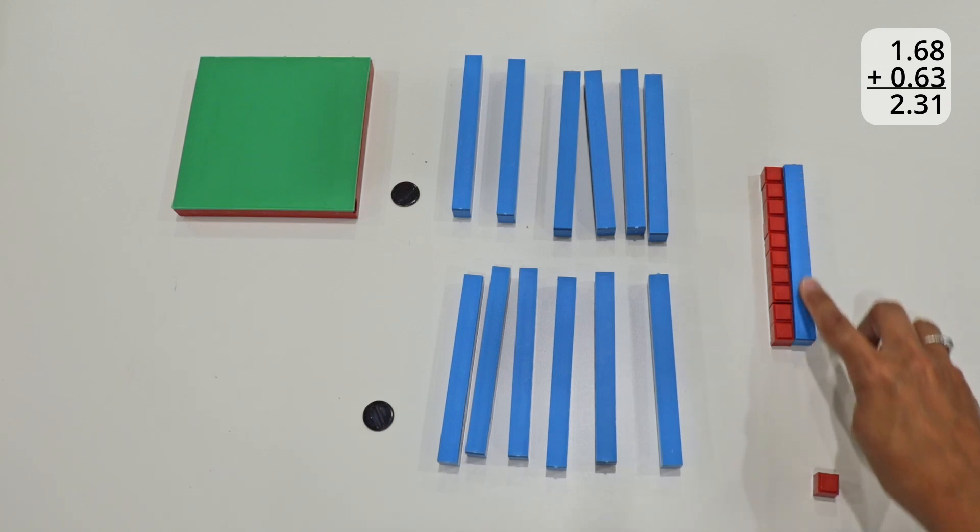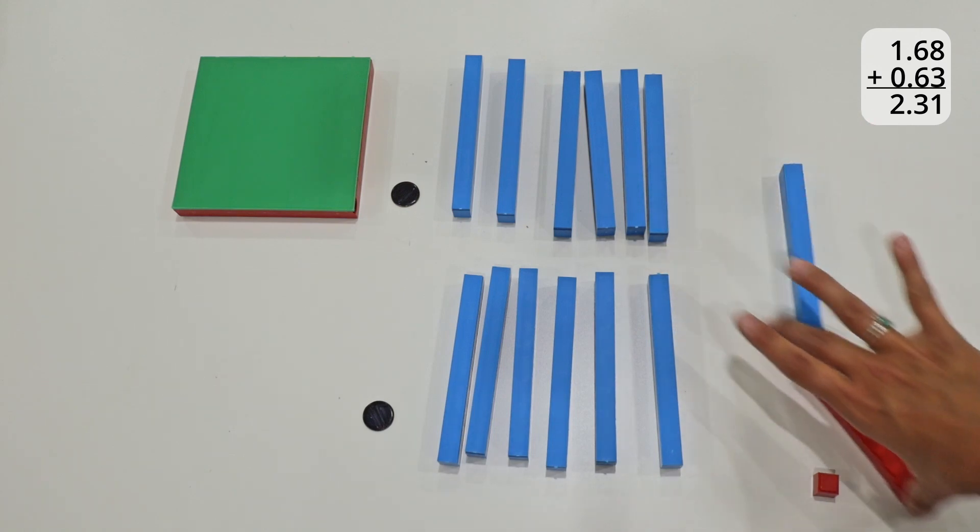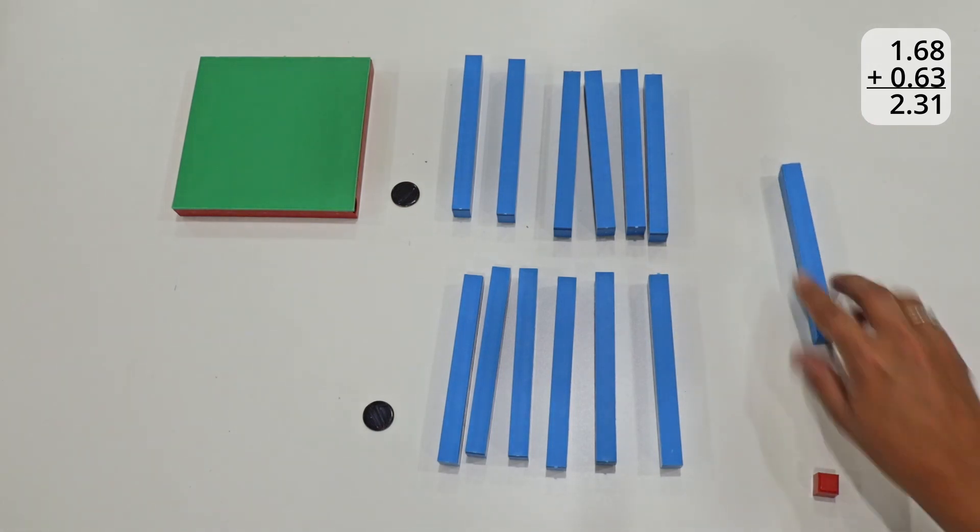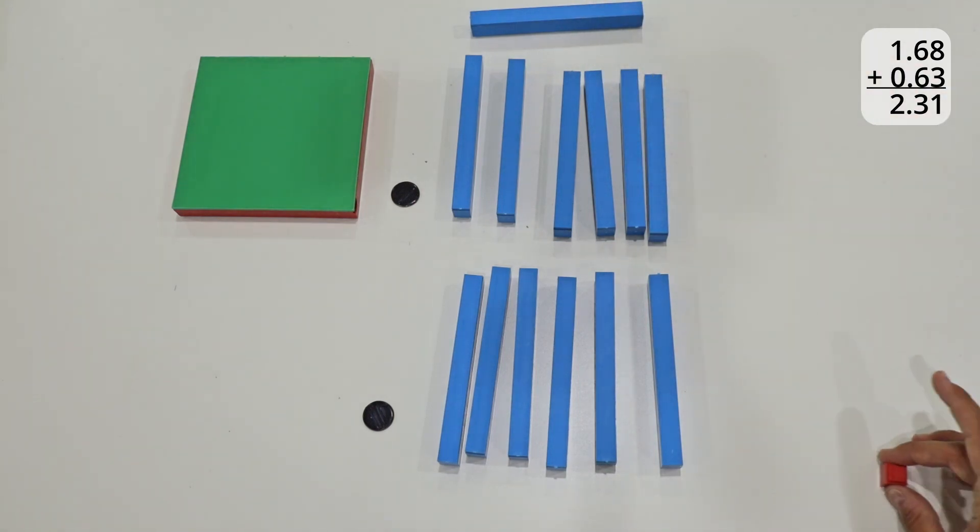And they can line it up and compare it to one of these tenth blocks, seeing that they equal and are the same size. So we're going to move this tenth block into this tenth column and we're going to get rid of all of these red small blocks that we don't need anymore, leaving just one single hundredth down there.